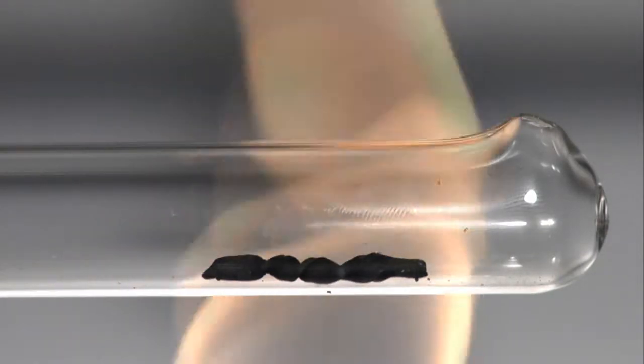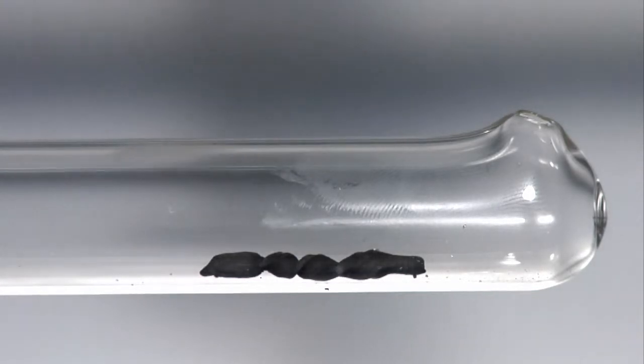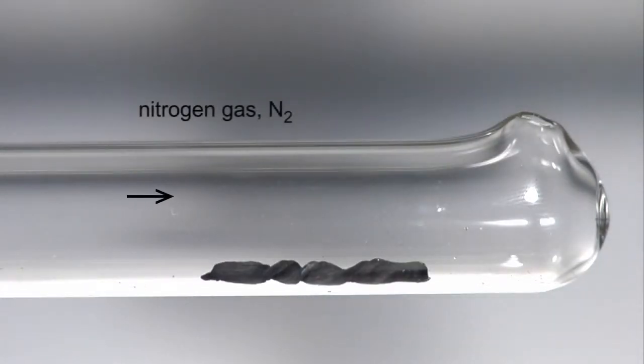Some small pellets of lithium are placed in a boiling tube, which has a vent blown into its end. Pure nitrogen gas is passed through the tube, and the lithium is heated with a Bunsen flame.